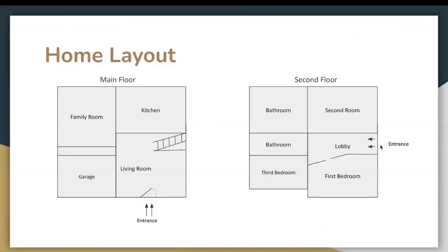This is my home layout. My house is a two-bedroom detached with two floors — the main floor and the second floor. The second floor is exactly lined on top of the main floor. When you enter the house you go straight into the living room. On top of the living room on the second floor you have the first bedroom. Next to the living room is the kitchen, and on top of the kitchen you have the second room on the second floor. On the left side of the living room you have the garage, and on top of that you have the third bedroom and bathroom. Here you have the family room and on top of that you have the bathroom.